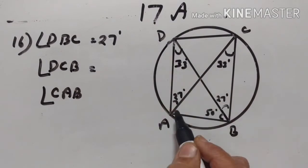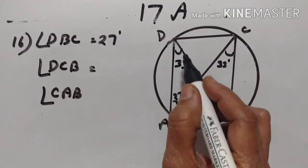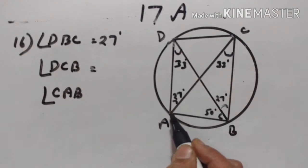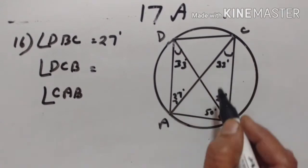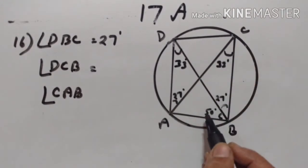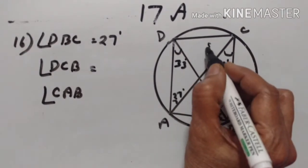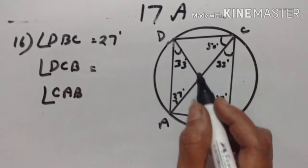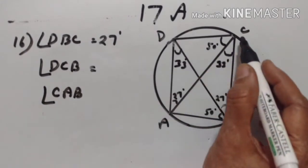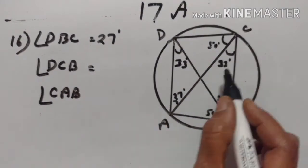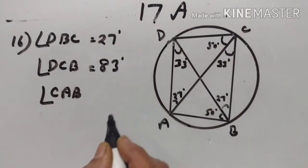Arc AD subtends angle DCA and angle DBA — angles in the same segment. So angle DCA is equal to 50 degrees. Therefore, angle DCB is equal to 50 plus 33, which is 83 degrees.